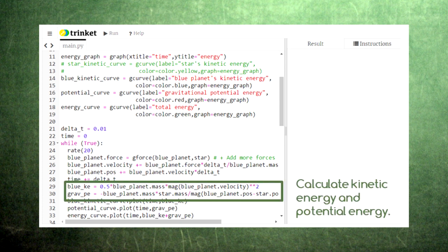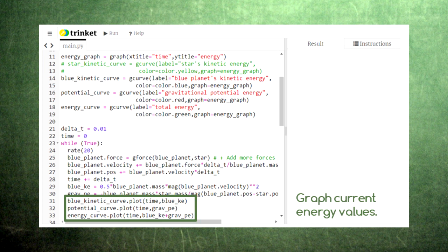Here in the loop, we calculate the two types of energy, kinetic energy and potential energy. These calculations are set up exactly like the equations we saw earlier. Lastly, we graph the current value of these two energies plus the total of the kinetic energy and the potential energy.